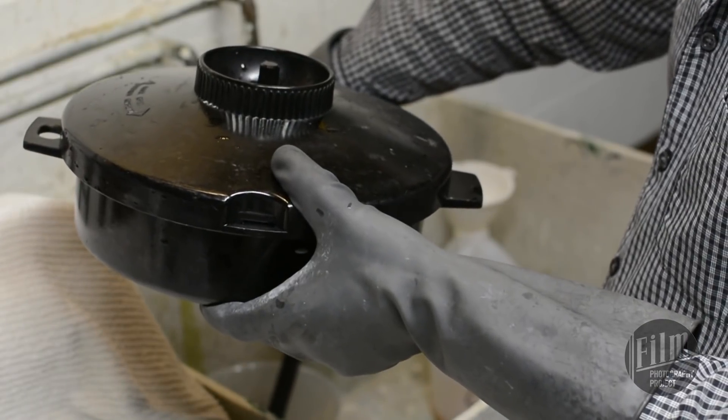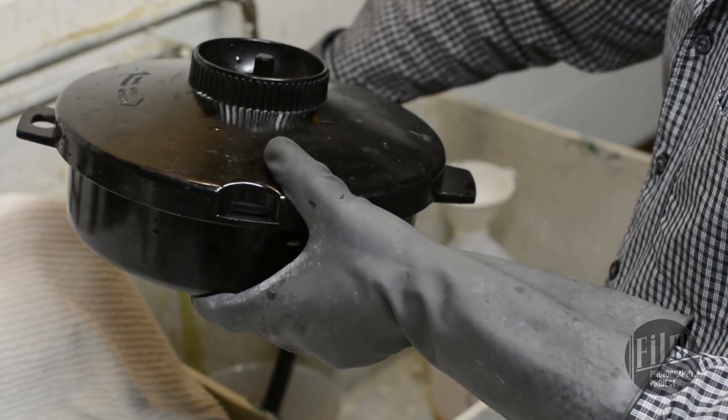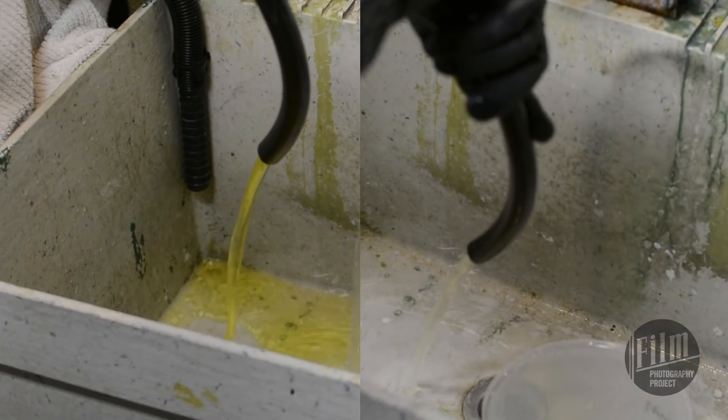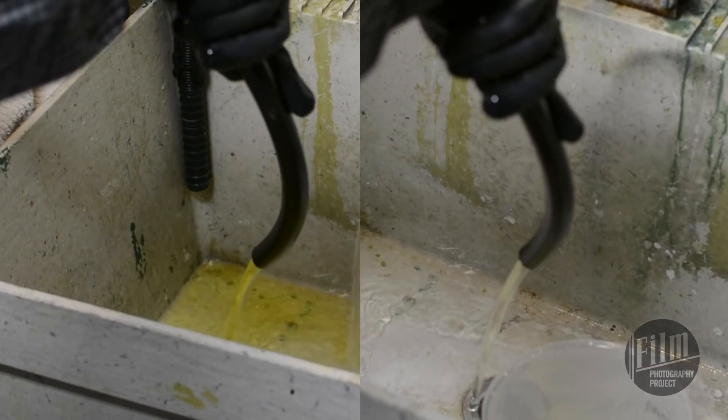Drain the tank into the bleach container. Rinse again with water until the water runs clear. You don't want any yellowish orange liquid coming out of the hose.